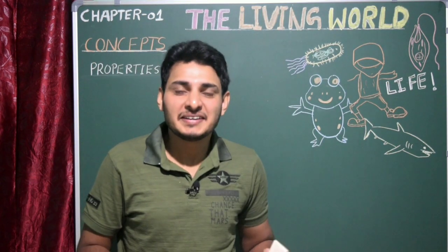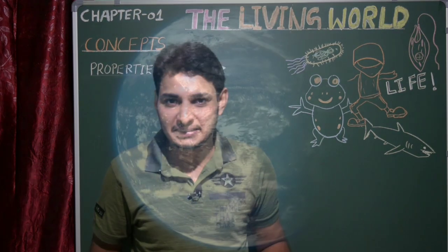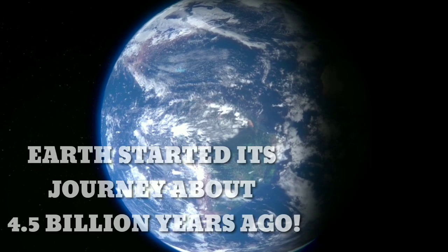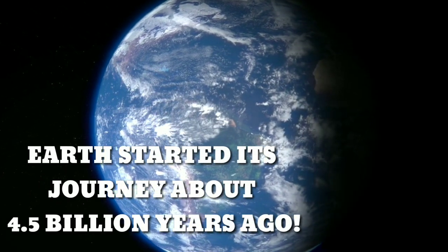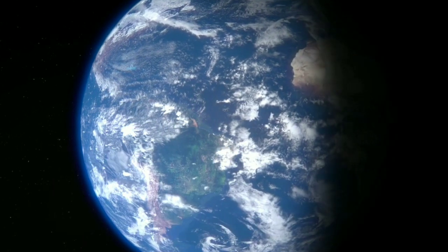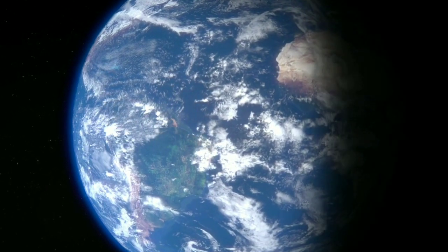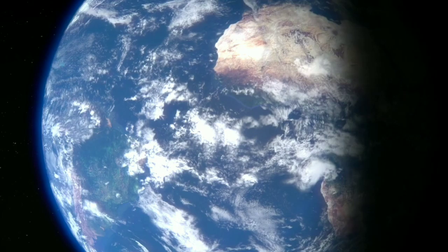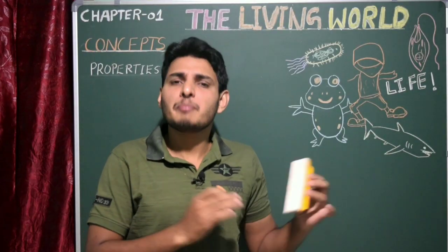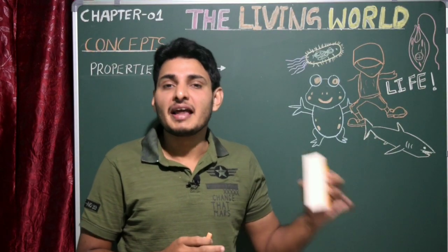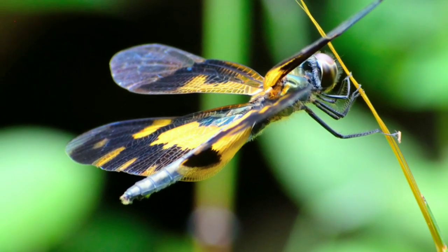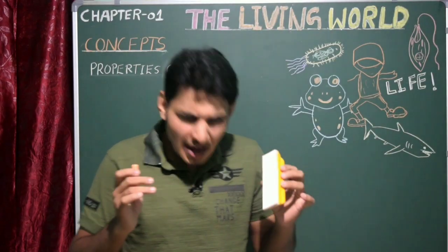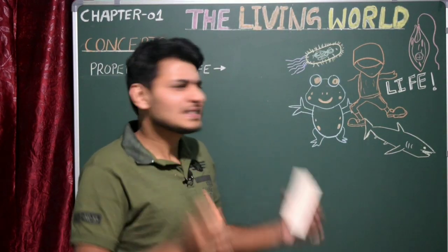Why is planet Earth so unique among other planets? Earth is so special because it is the only planet which has liquid water and its own atmosphere. It has oxygen — the life gas — and it is the only planet where life exists. All living organisms are intelligent. Now I have a question: what is exactly life, or what is the meaning of living?